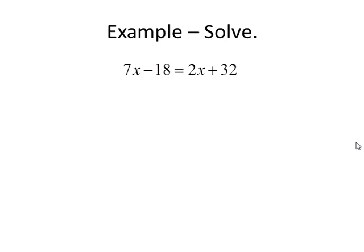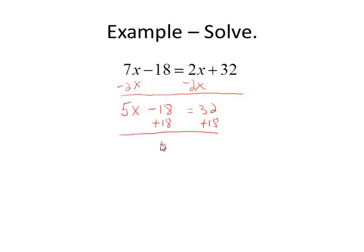In this example, a little different, we have variables on both sides, so we want to collect those on one side first, and I can do that by subtracting 2x from both sides. That will collect my variables on the left. I could also have subtracted 7x from both sides to collect them on the right. Combining 7x minus 2x is 5x. Then I want to get the constants to the other side, so add 18. I have 5x equals 50, and I finish by dividing both sides by 5, and I'm left with x equals 10.